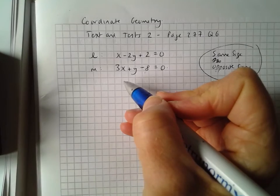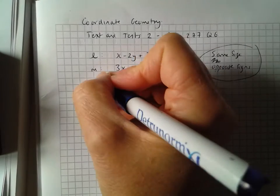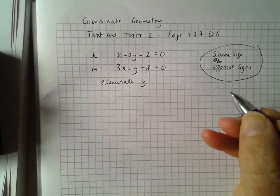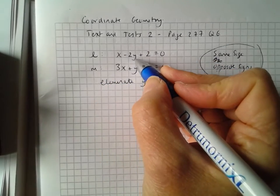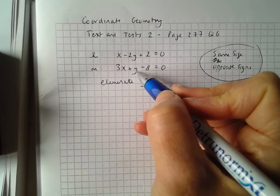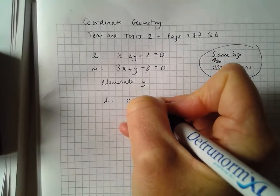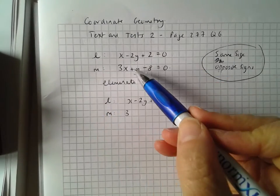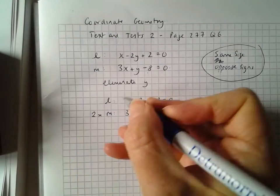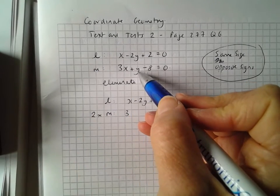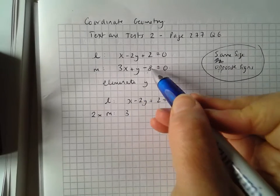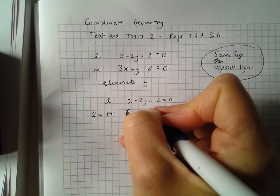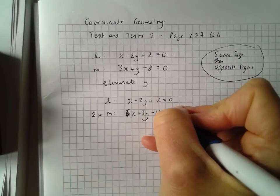It looks to me like the easiest thing to do would be to try and get rid of the y's. So I'm going to eliminate y — this method is called elimination. L has got minus 2y in it, so I'd like M to have plus 2y in it. L stays as x minus 2y plus 2 equals 0. For M, it's only plus y, so I need to do 2 times that line. If I multiply y by 2 I'll get plus 2y, but I have to do it to x and to the number as well. So 2 by 3x is 6x, 2 by plus y is plus 2y, 2 by minus 8 is minus 16 equals 0.